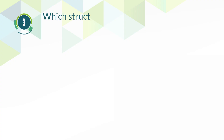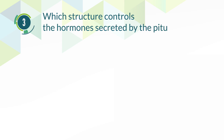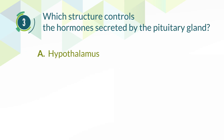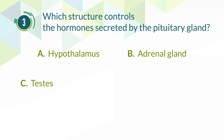Number 3. Which structure controls the hormones secreted by the pituitary gland? A. Hypothalamus. B. Adrenal gland. C. Testes. D. Pancreas.